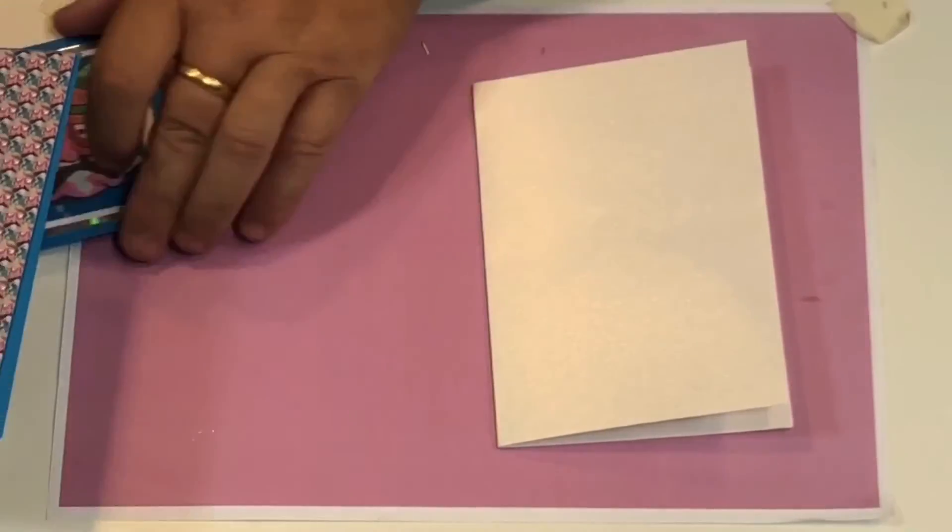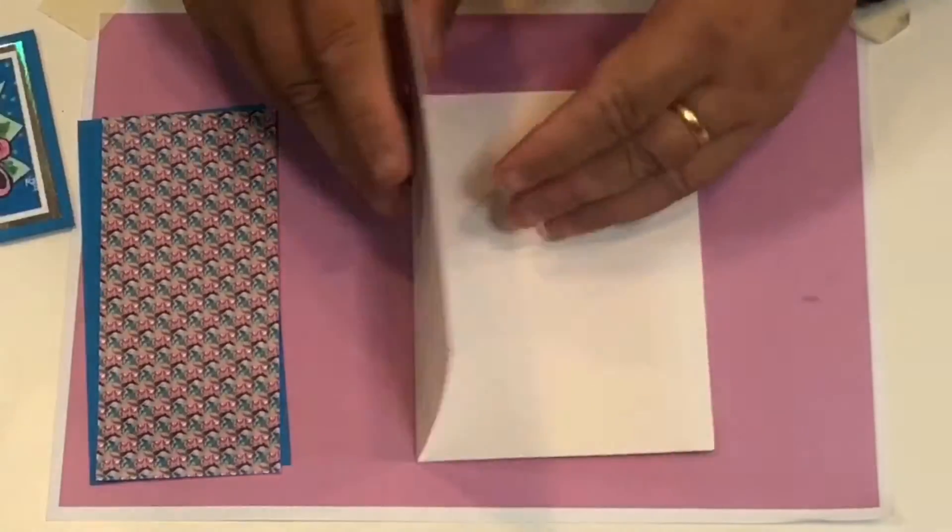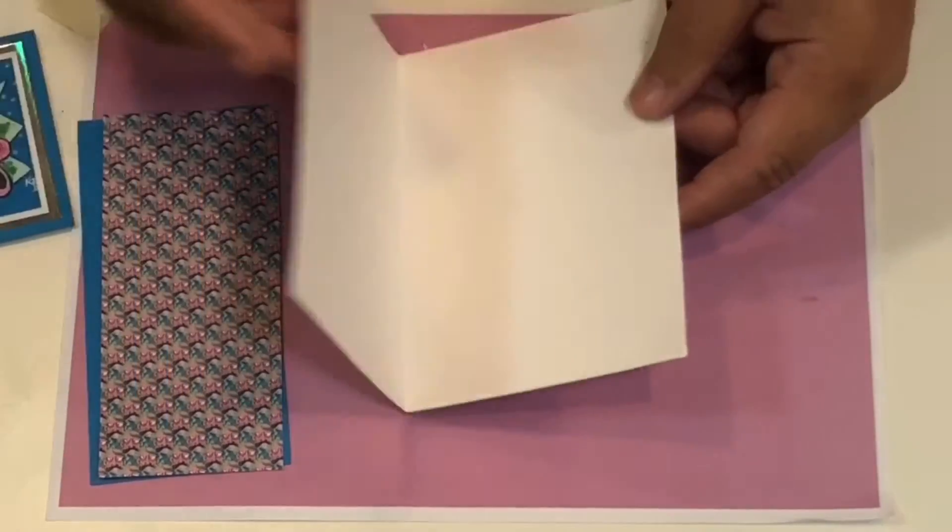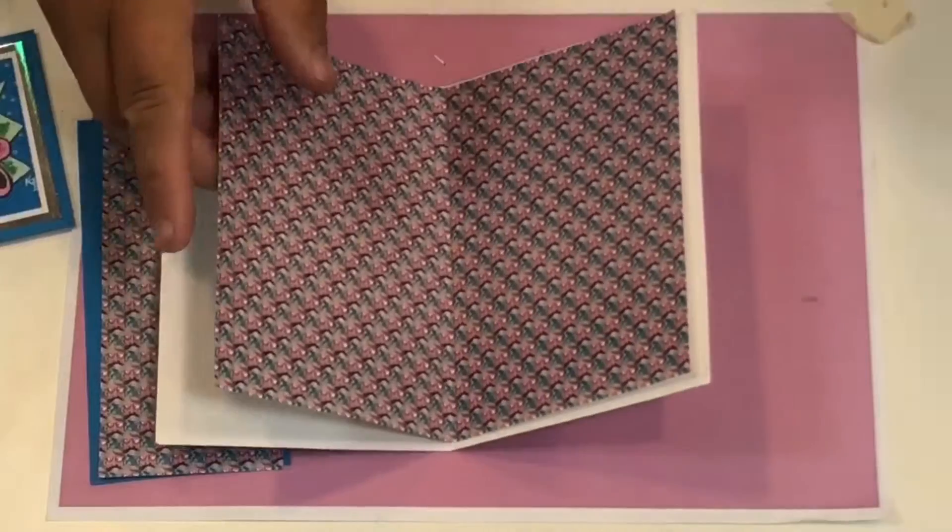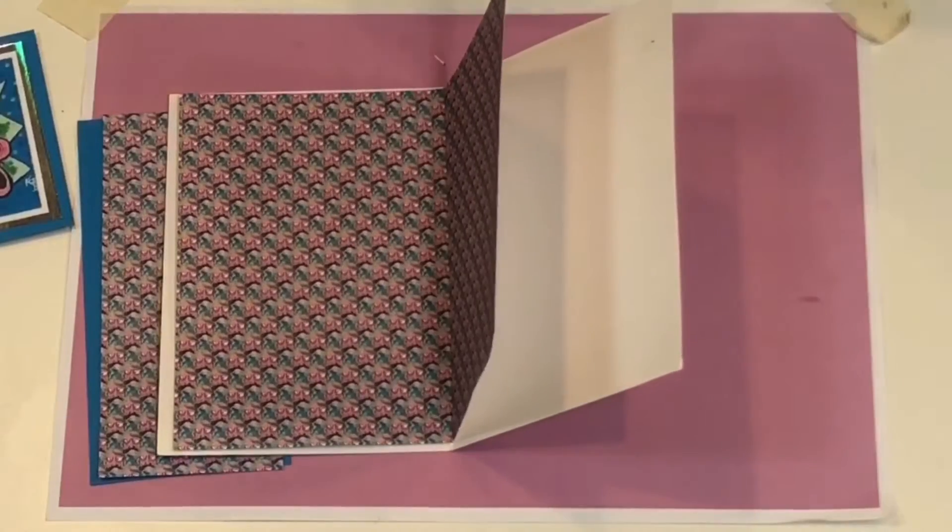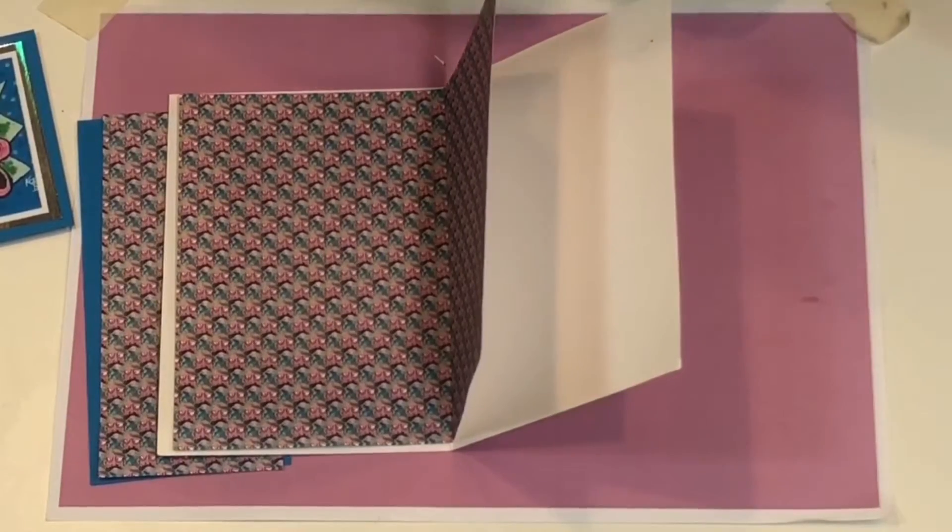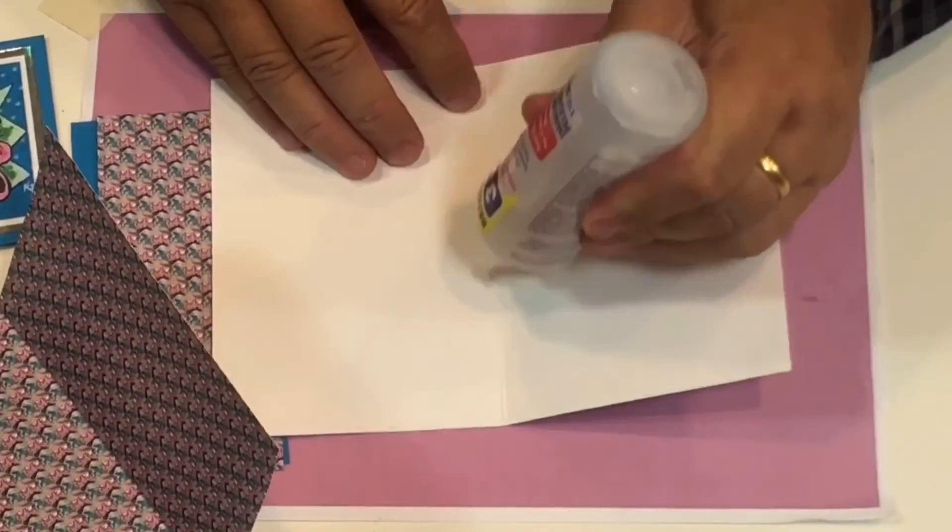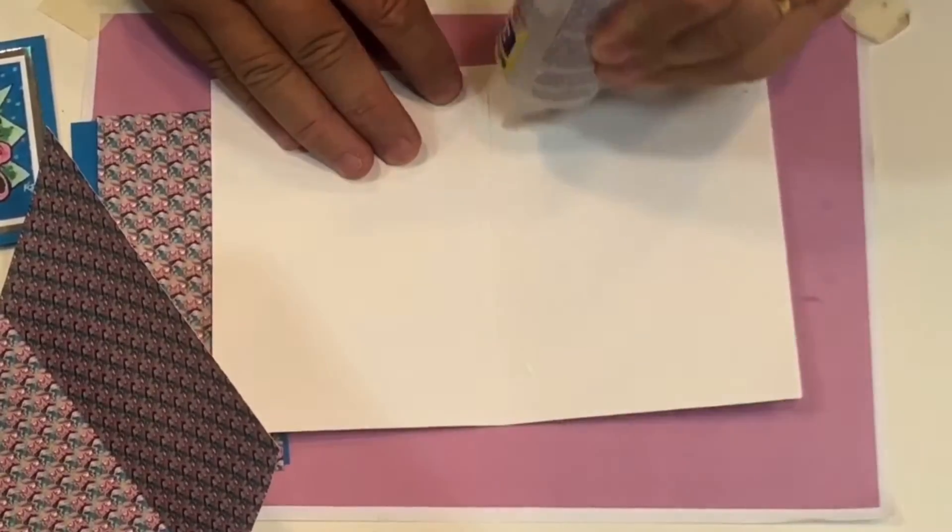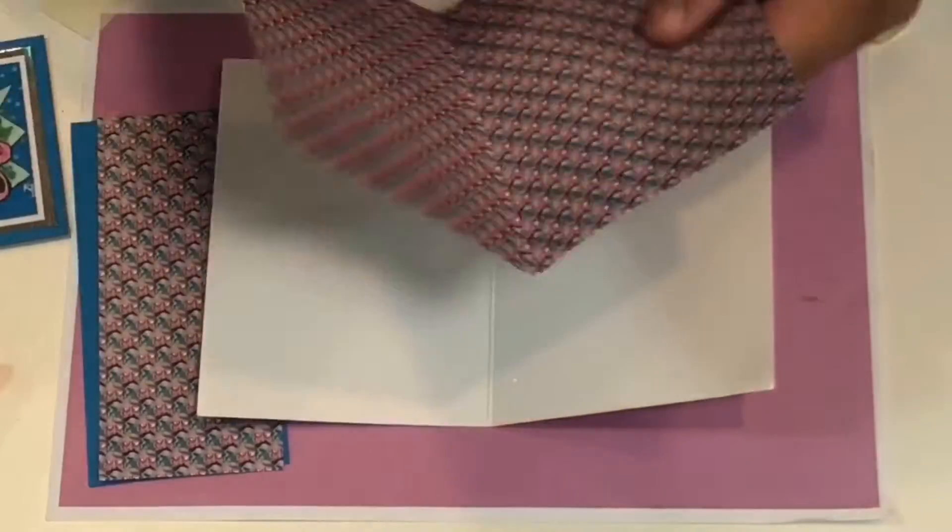I've also got a topper here, so I'm starting off with just an ordinary C6 card and I've cut this piece of paper, trimmed it to size, and I'm going to stick that into the center of the card there. Just a little bit of glue and put that in the right place.